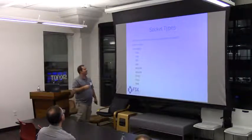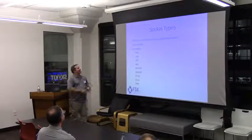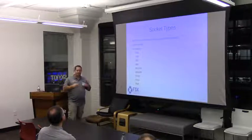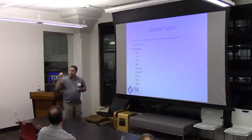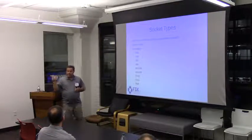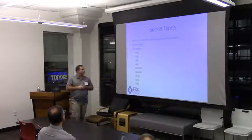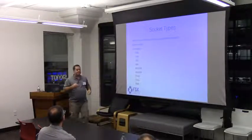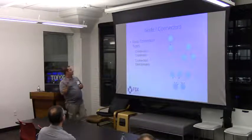Moving on to socket types — 0MQ redefines the term socket. Rather than just a file descriptor, every socket has a background communication engine, internal queues, and what I refer to as a personality or pattern: pub, sub, request, reply, router, dealer, push, pull, and pair. These different patterns satisfy normal distributed communication needs.